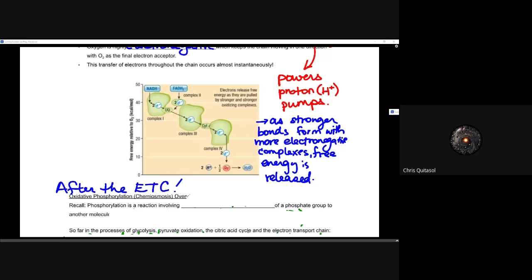So this electron transport chain is just the movement of electrons from complex one to complex two, to complex three, complex four, and finally that oxygen molecule at the end, because then we're starting to produce that water.